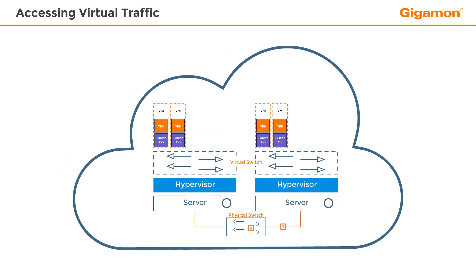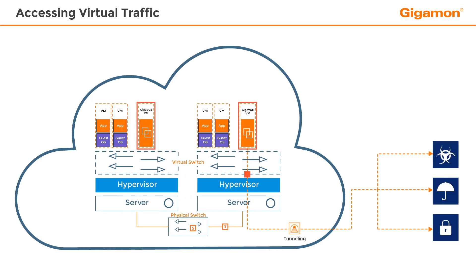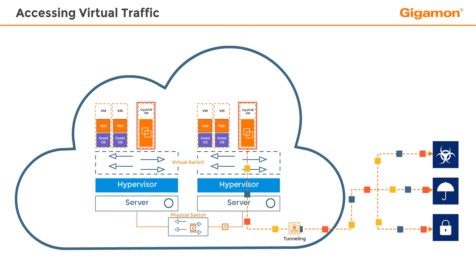The other means to gain visibility in a virtual environment would be to install a single Gigaview VM virtual machine. The Gigaview VM collects traffic from the virtual switch and forwards it through a tunnel to the physical tools.